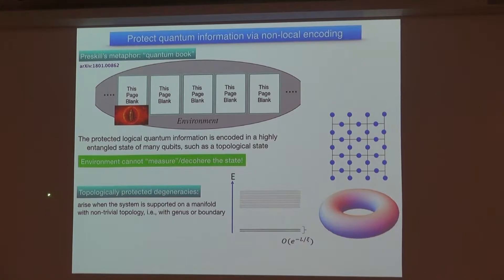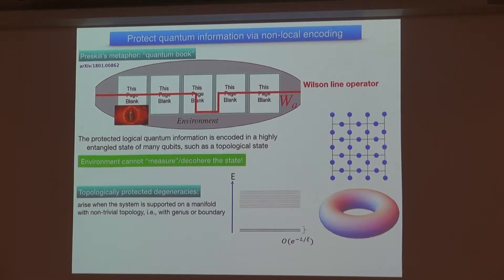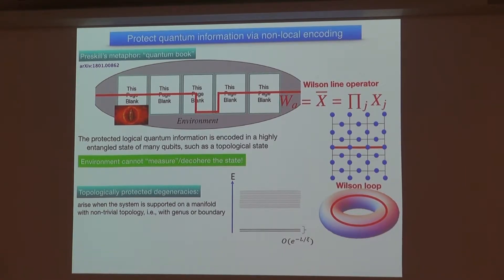For the interest of this talk, we are interested in topological states, where topological degeneracy arises when you put the systems on a non-trivial manifold, either with a genus or some boundary. This opens up a degeneracy. In some cases, the non-local information is stored in so-called Wilson line operators. In the more familiar case like surface code, it's nothing but a Pauli-string operator of X or Z operators. It can be a Wilson loop operator around the torus. Any local operator applied by the environment cannot lift the topological degeneracy and hence reduce your T1 and T2 time.